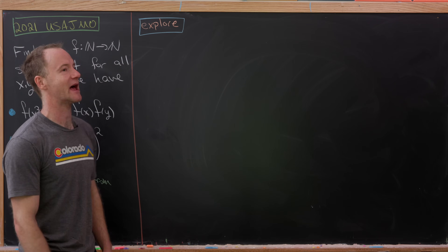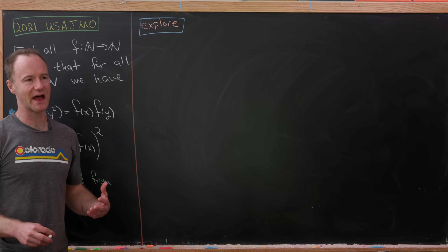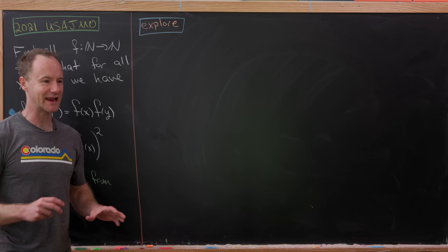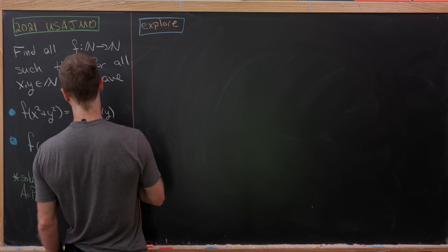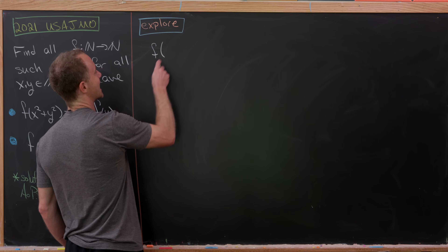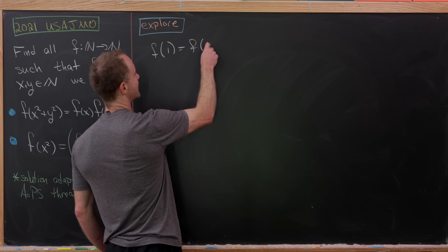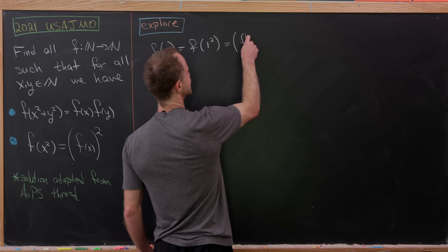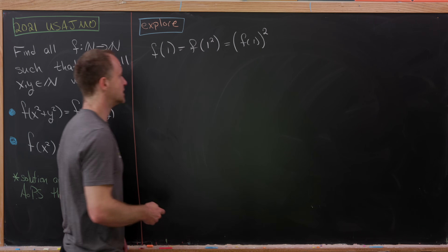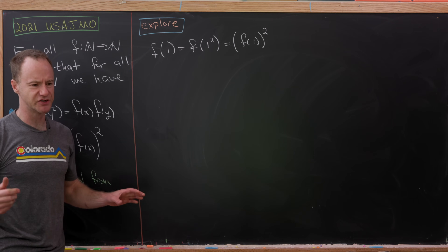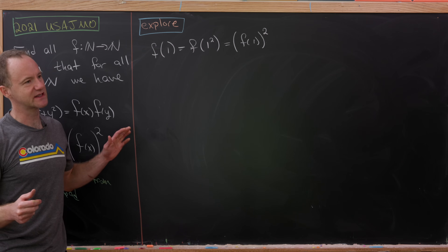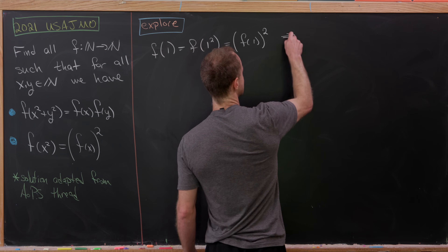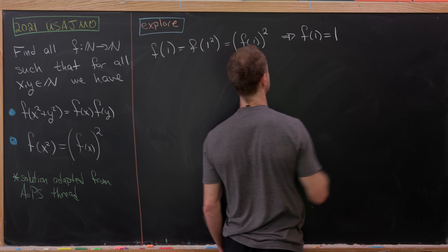In order to get started we're going to do some exploration — calculating f at certain simple numbers to get an idea of what the function might be. Let's start with f(1). Notice that f(1) = f(1²) = f(1)², so f(1) satisfies x² = x. The only natural number satisfying that is 1, so f(1) = 1.